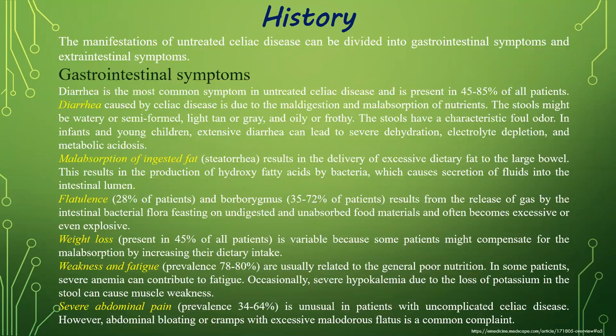Diarrhea is present in 50 to 85 percent of all patients. The stool caused by celiac disease due to maldigestion and malabsorption of nutrients may be watery or semi-formed, light tan or gray, and oily or frothy. The stool has a characteristically foul odor. In infants and young children, extensive diarrhea can lead to severe dehydration, electrolyte imbalance, and metabolic acidosis. Malabsorption of undigested fat, or steatorrhea, results in delivery of excessive dietary fat to the large bowel, producing hydroxy fatty acids by bacteria, which cause secretion of fluids into the intestinal lumen. Flatulence and bloating result from the release of gas by intestinal bacterial flora fermenting undigested and unabsorbed food materials, and often becomes excessive or even explosive.